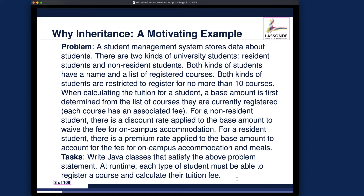Your task is to write Java classes that will satisfy the above problem statements. At runtime, each type of student — either resident or non-resident — must be able to register a course and calculate their tuition fee accordingly, depending on whether they use premium rates or discount rates. Now pause the video and read through the problem description carefully.